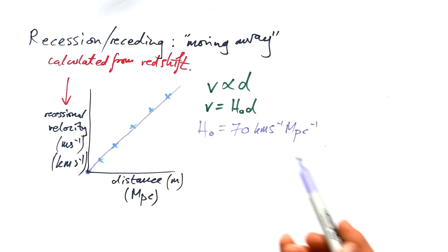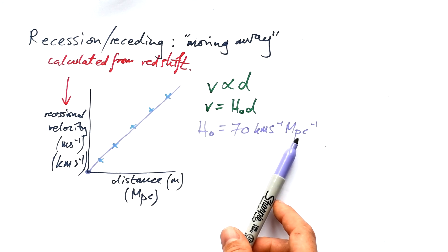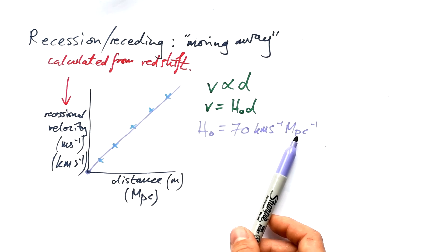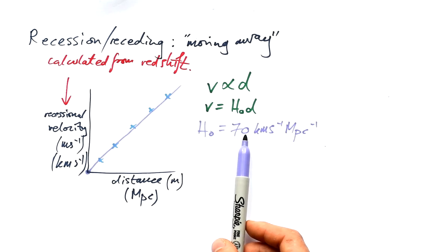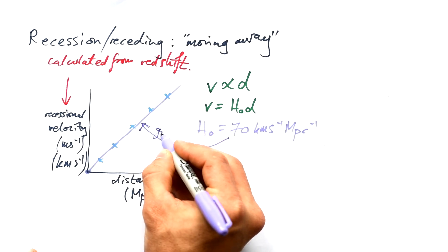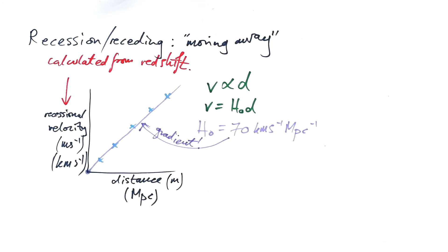So that's a nice number, even though the units are a little bit crazy, but that just says that for a galaxy that's one megaparsec away, its recessional velocity is 70 kilometers per second. If you look at a galaxy that's two megaparsecs away, then the recessional velocity should be 140, so on and so forth. So obviously it's the gradient of this line that gives us the Hubble constant, because it's recessional velocity divided by the distance.